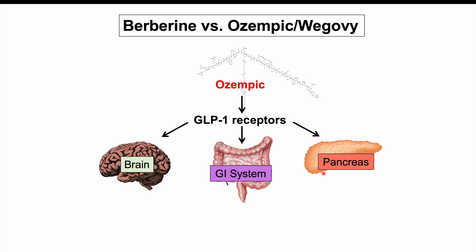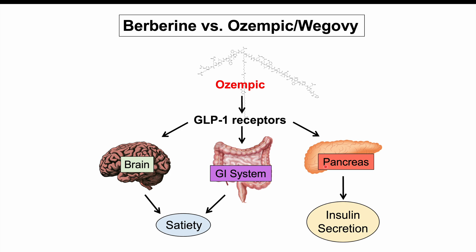When ozempic binds to GLP-1 receptors in the brain and gastrointestinal system, it leads to a sensation of satiety — feeling full. In the brain, activating these receptors suppresses your appetite. In the stomach more specifically, it reduces gastric emptying, so your stomach holds onto food longer and feels fuller quicker. In the pancreas, ozempic binds to GLP-1 receptors in the pancreatic beta cells — the cells that release insulin — and stimulates the secretion of insulin. These are the mechanisms of how ozempic works.